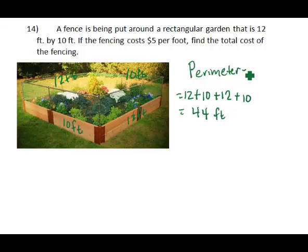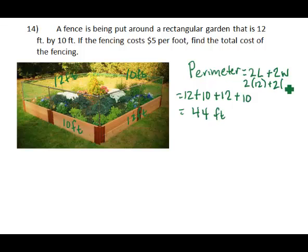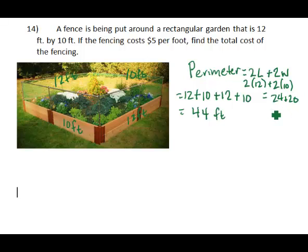You can also use the formula for perimeter, which is two lengths added to two widths. We would substitute in the length measurement of 12 and a width measurement of 10. Because we double that — two 10 foot sides and two 12 foot sides — we would get 24 and 20, and our total perimeter would still be 44 feet.